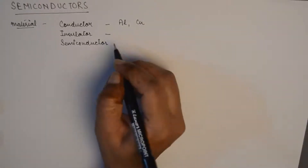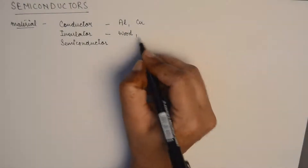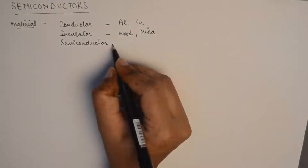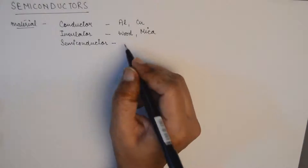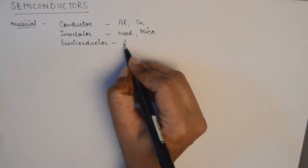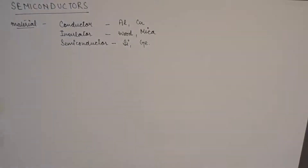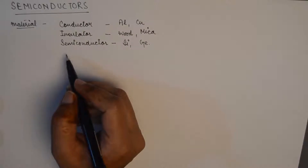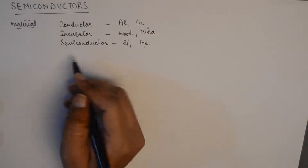For insulators, examples are wood or mica. For semiconductors, the two most important and commonly used materials are silicon and germanium. Since this classification is based on the conductivity of these materials, let us first understand what conductivity is.